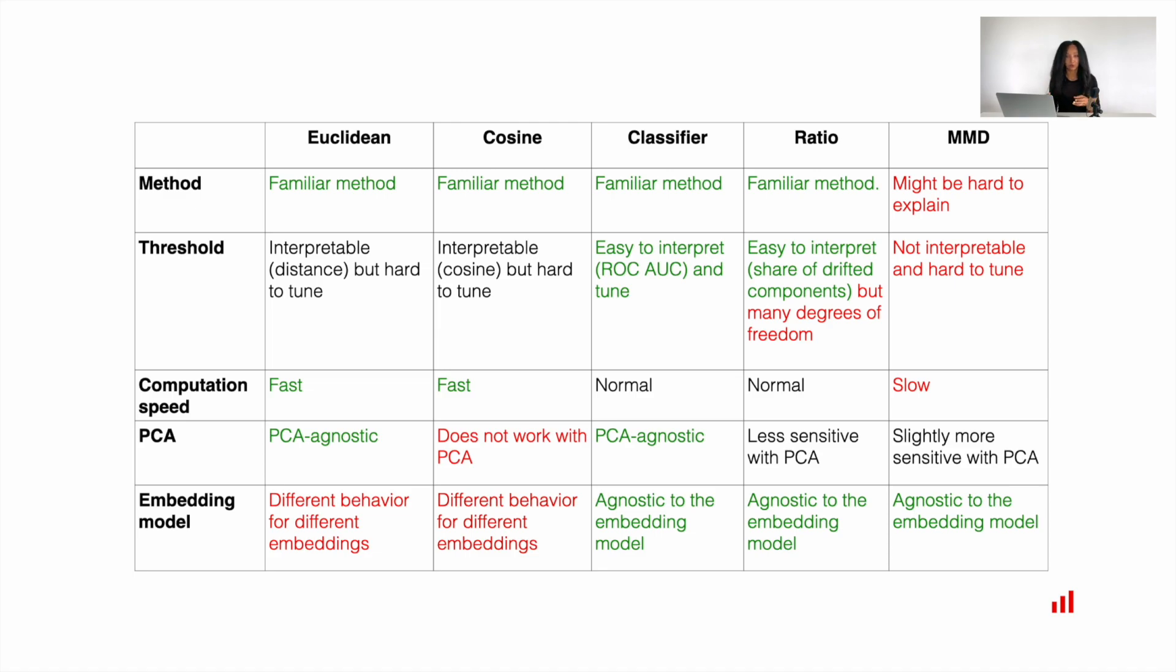But if, for example, you want to choose something faster, you can go to distance-based metrics like Euclidean or Cosine, or maybe if you want to have some specific features or properties of drift detection method for your embeddings, just check out our blog, take a close look to this table, and select something which is the most relevant to you.